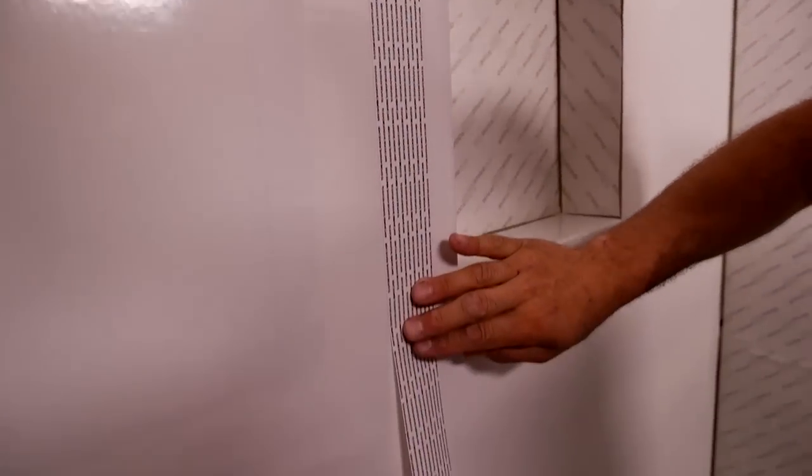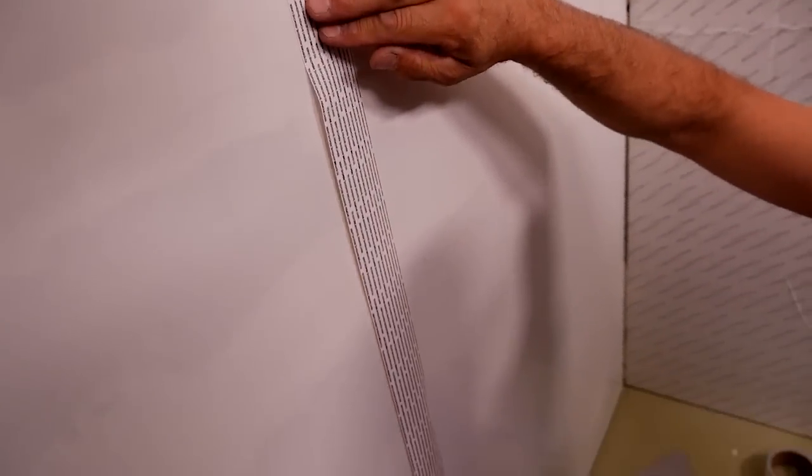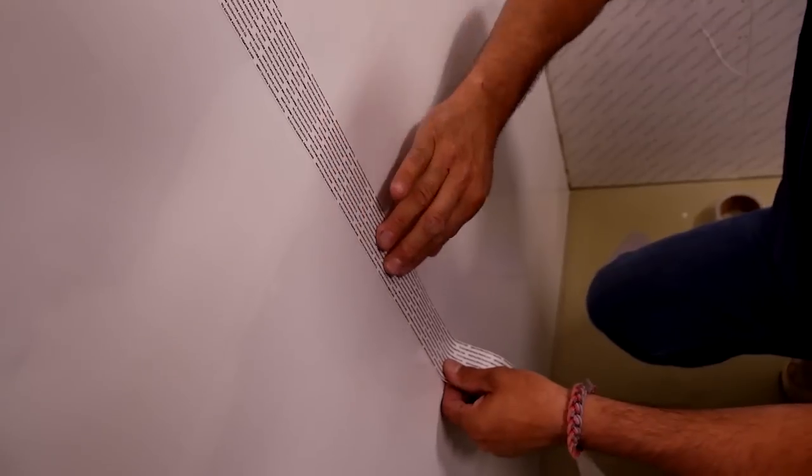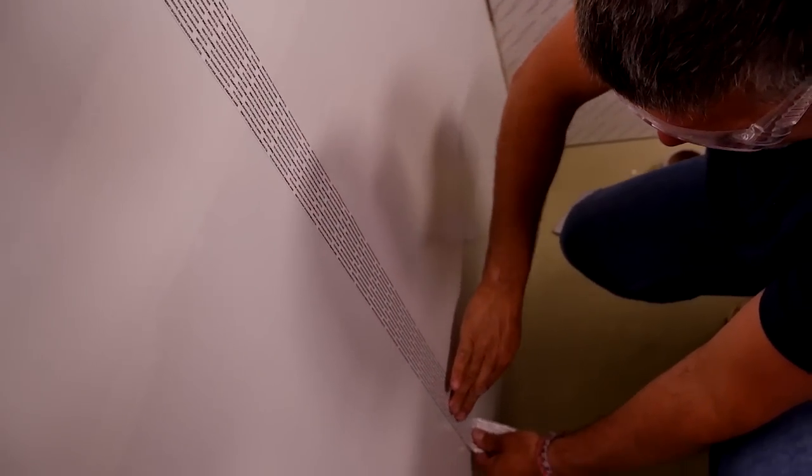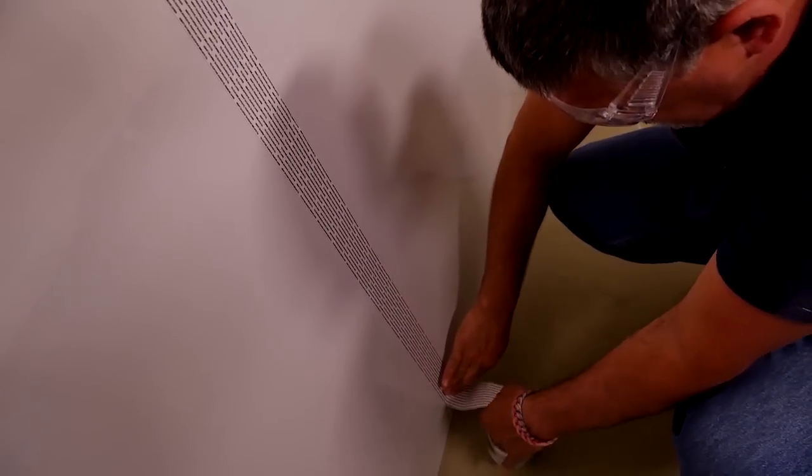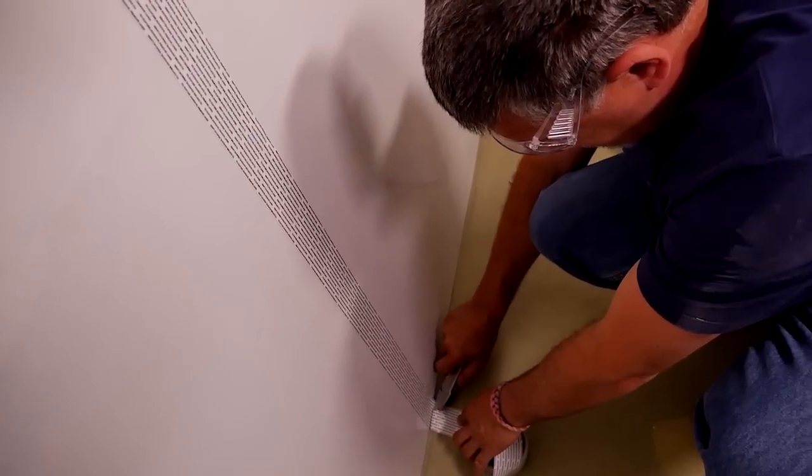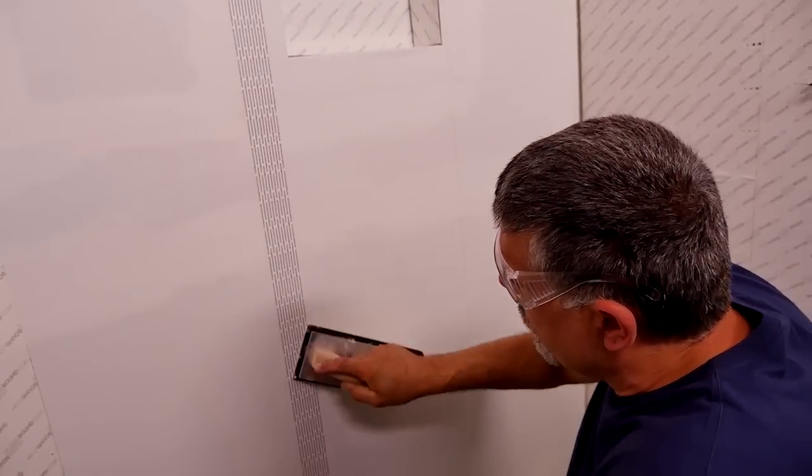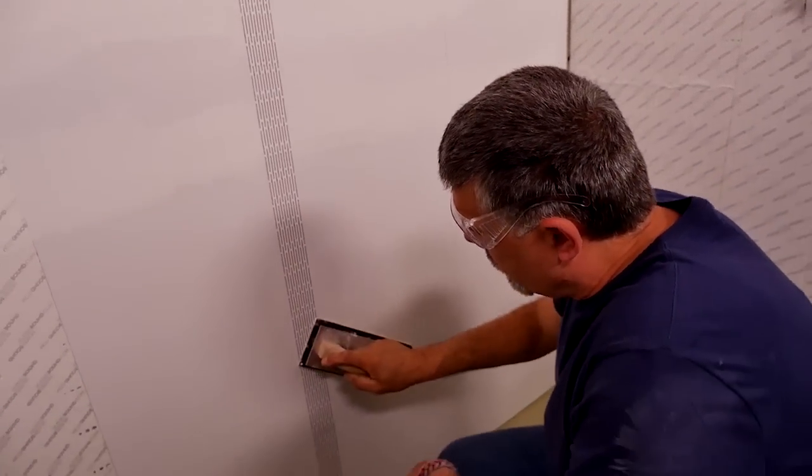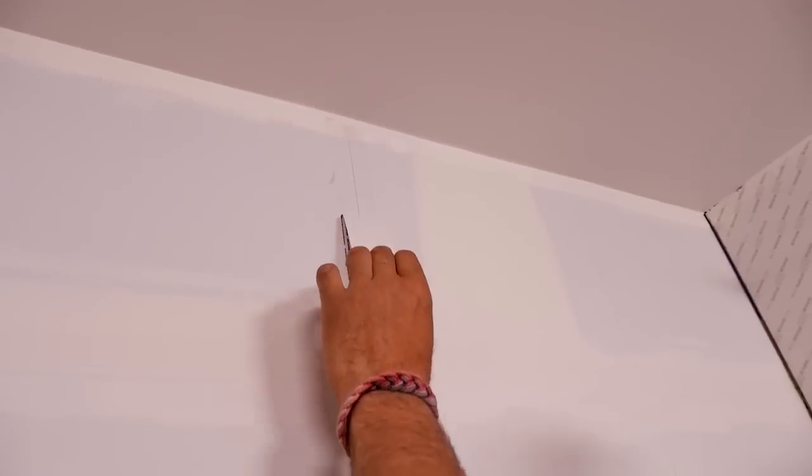Center the seam tape's non-adhesive side against the top of the mat seam and hand press it into place, working toward the bottom of the wall, and then trim to the correct length. Use a grout float or putty knife to smooth the seam tape and apply firm pressure to activate the mat's bond to the tape.